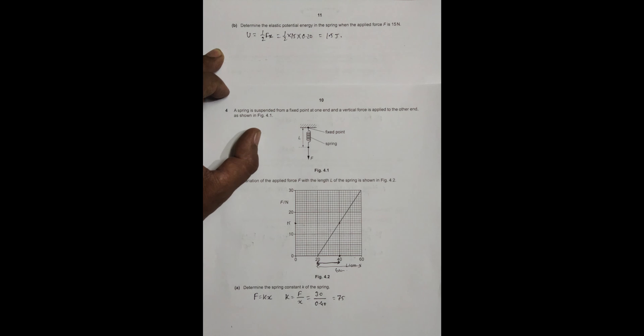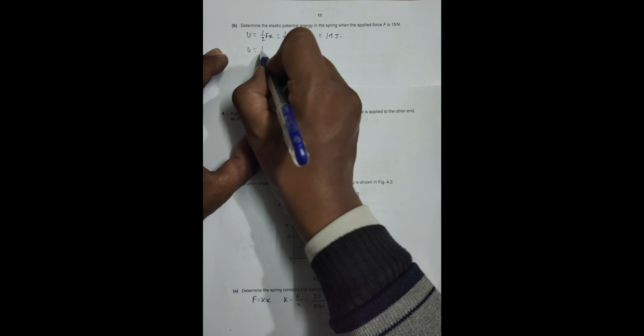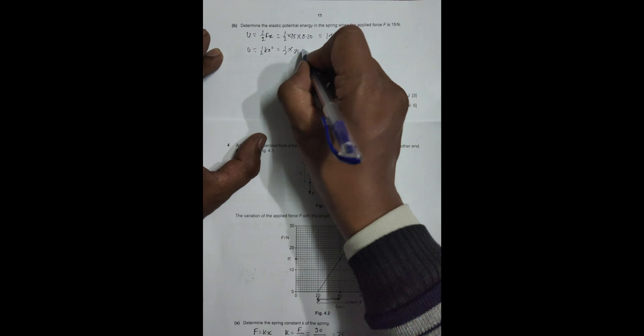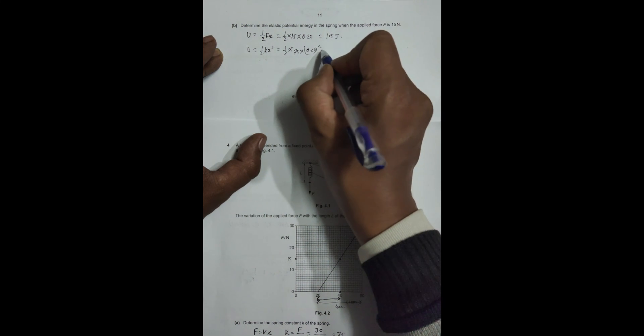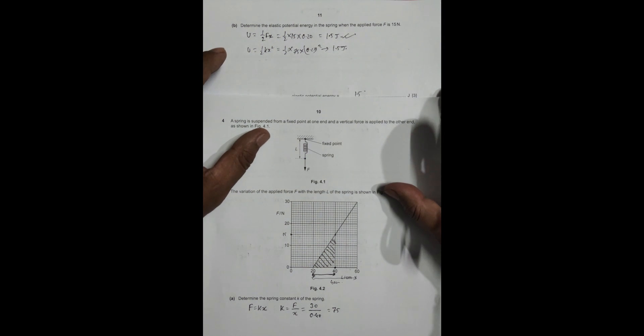One thing to remember is we can also use U equals 1/2 kx squared, since we have got the value of k. So it becomes 1/2 into 75 into 0.20 squared, which ultimately becomes again 1.5 joules. We have multiple choices on how to do this. Also, we can do it simply by using the area here. It's 1/2 times height, which is 15, times base, which is 0.2. Same thing as the first one. So any one approach will work.